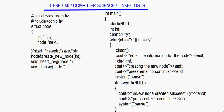And then we have pointers: start, new_ptr, save, and ptr — all of type node. This means that the pointer 'next' can point only to another node. Same way, start will point to a node, new_ptr will point to a node. These pointers can store only addresses, and these addresses will be of different nodes.